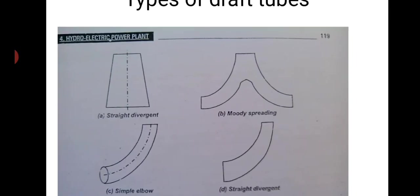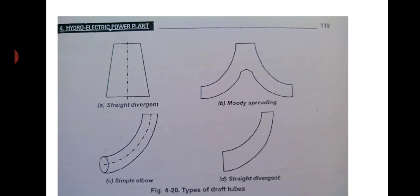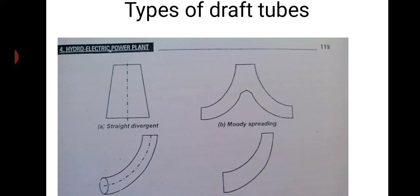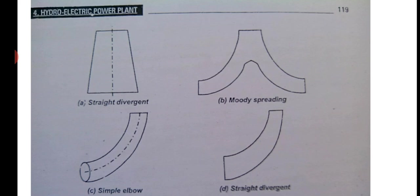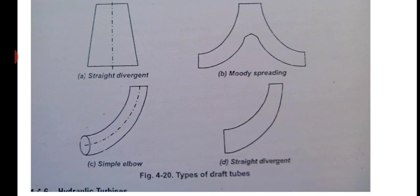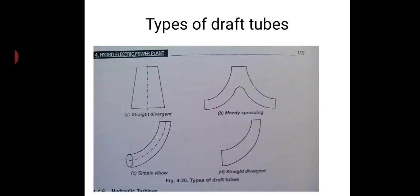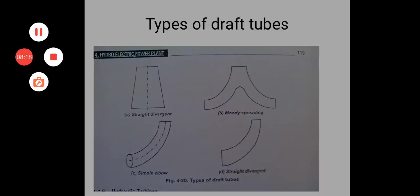The draft tube connects the turbine outlet to the tail race. In our college, we have all three turbines — Francis turbine, Kaplan turbine, and Pelton wheel — where you can see the draft tube. The types of draft tubes are: straight divergent, Moody spreading, simple elbow, and straight divergent with elbow. In the next class, we will see the turbine governor. Thank you.